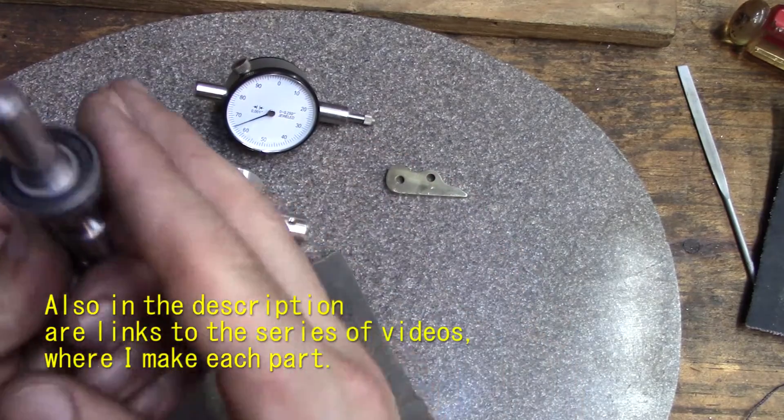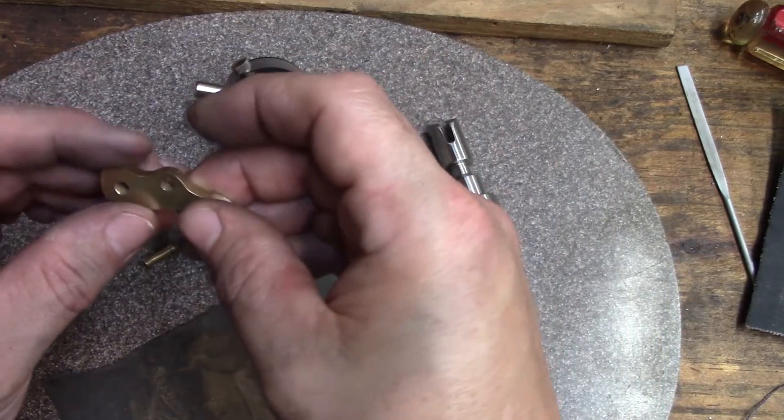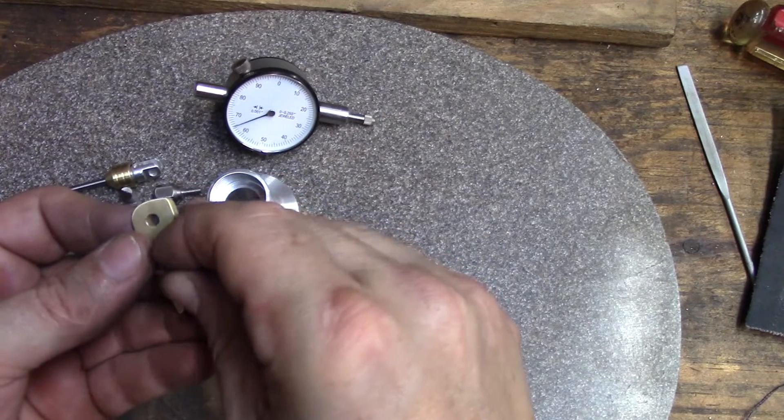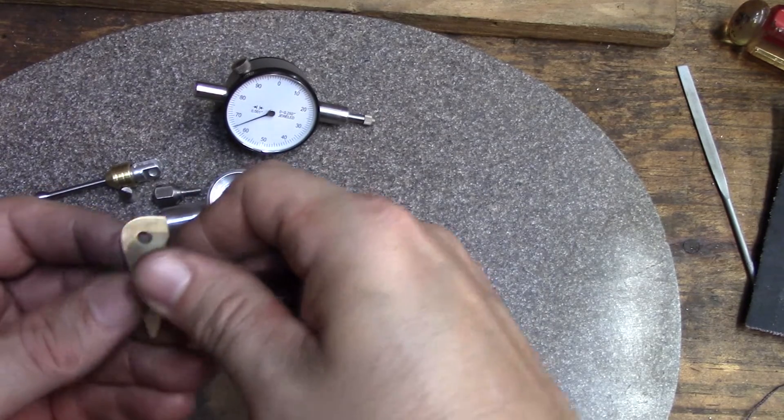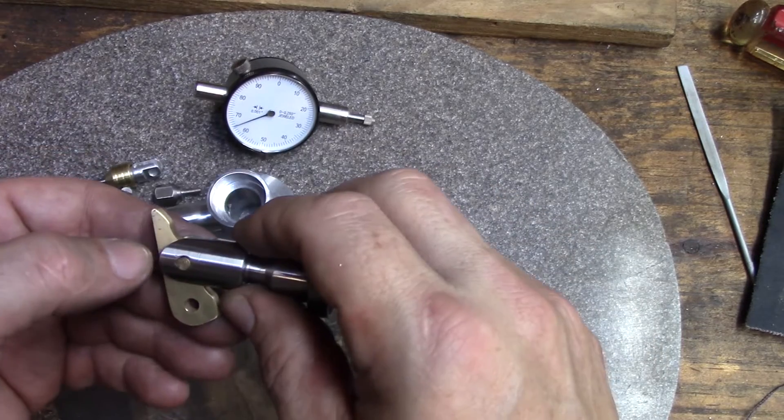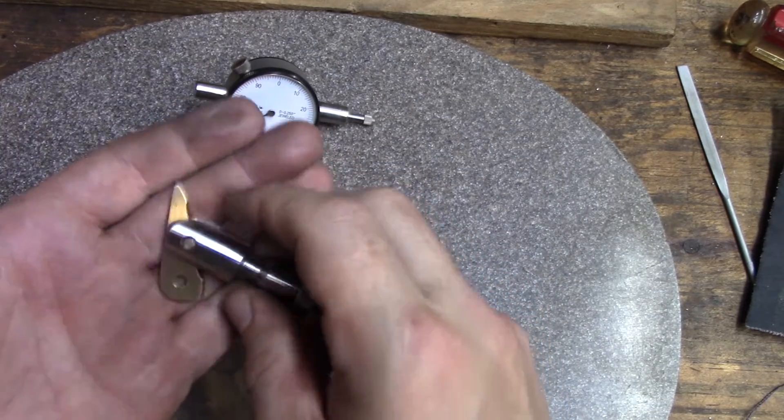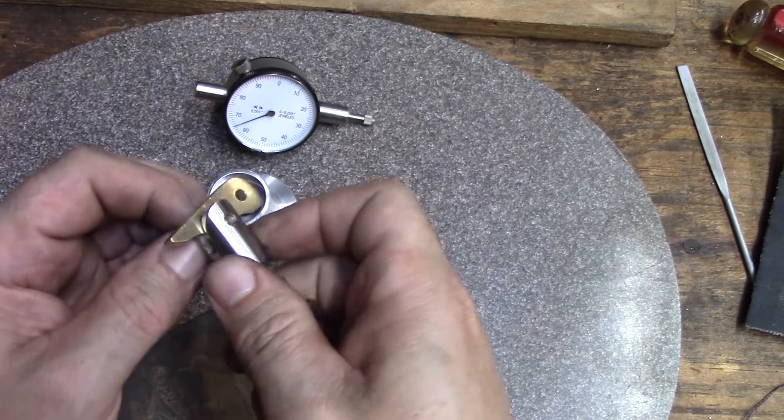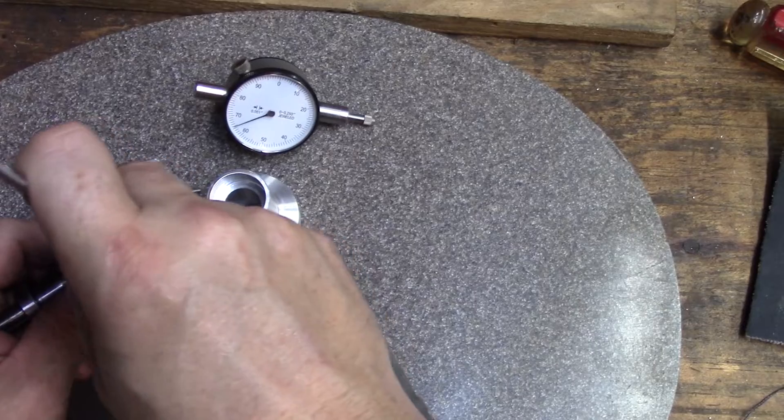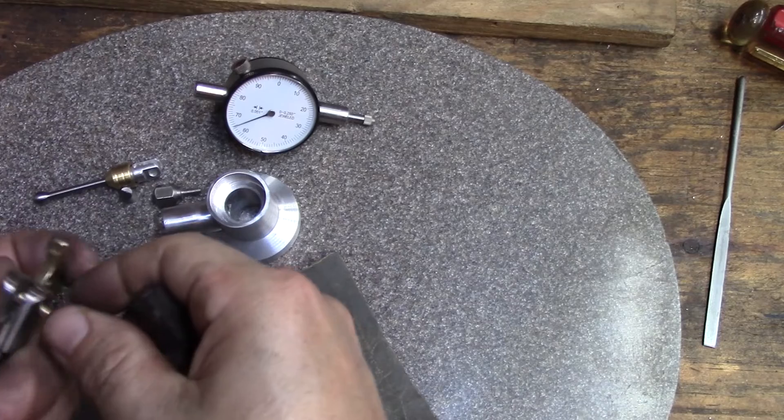First off, you've got the shaft. You have a bearing on here that is press-fit on. This is the rocker. The rocker goes onto the shaft. Pin goes in like so. This is a test pin so I can get it in and out. Now I will make this a press-fit on one side so it doesn't just fly out. As it is, it comes out fairly easily.